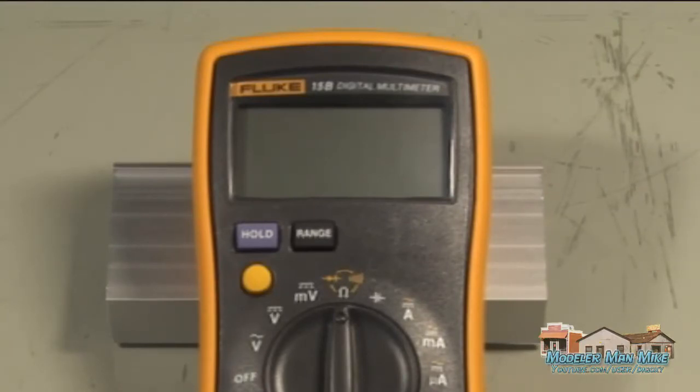Many multimeters now have a function key like this one, a Fluke, a big yellow key is a function key.